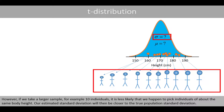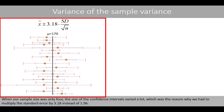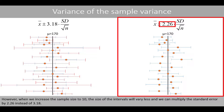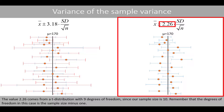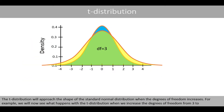However, if we take a larger sample, for example 10 individuals, it is less likely that we happen to pick individuals of about the same body height. Our estimated standard deviation would then be closer to the true population standard deviation. When our sample size was only 4, the size of the confidence intervals varied a lot, which was the reason why we had to multiply the standard error by 3.18 instead of 1.96. In comparison, when we increase the sample size to 10, the size of the intervals will vary less and we can multiply the standard error by 2.26 instead of 3.18. The value of 2.26 comes from a t-distribution with 9 degrees of freedom since our sample size is 10. Remember that the degrees of freedom in this case is the sample size minus 1.